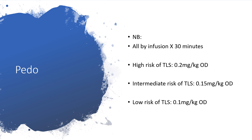For high-risk Tumor Lysis Syndrome in a pediatric patient, give 0.2 milligrams per kilogram once daily. If the risk of Tumor Lysis Syndrome is intermediate, give 0.15 milligrams per kilogram once daily. If the risk of Tumor Lysis Syndrome is low, give 0.1 milligrams per kilogram once daily.